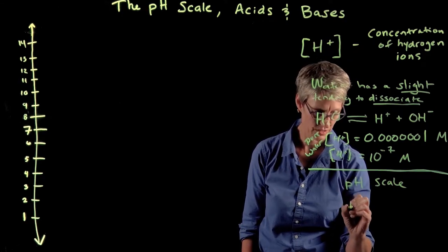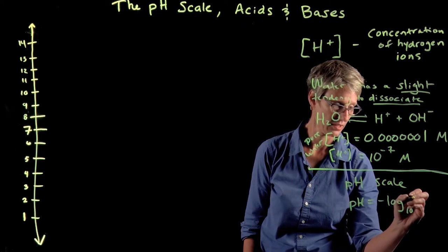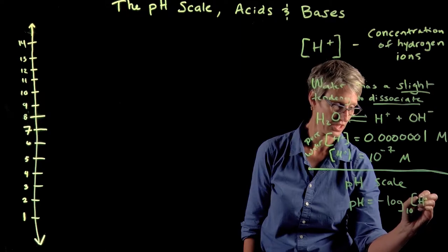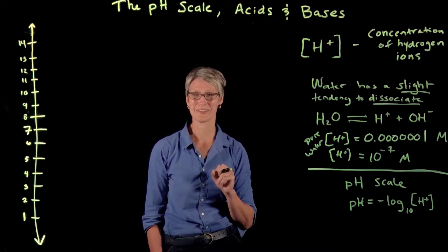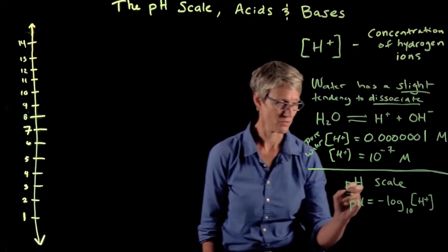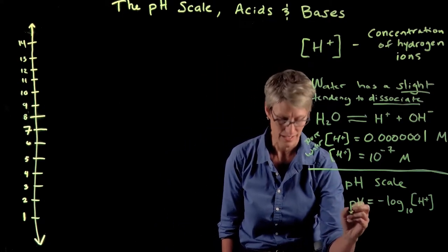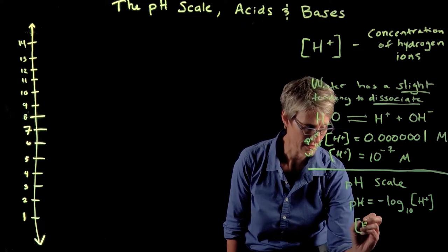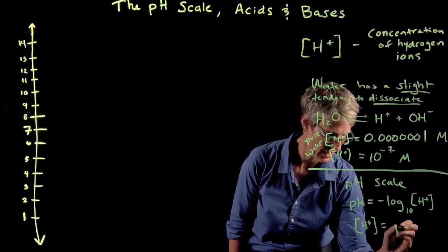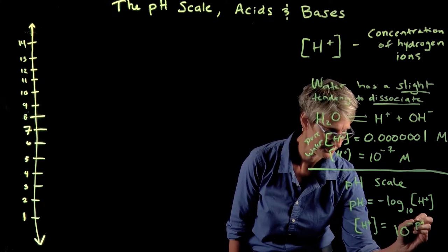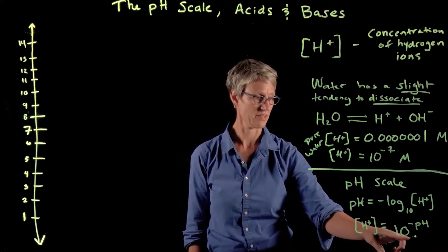pH equals the negative log base 10 of the concentration of hydrogen ions. Remember that the log is the inverse of the exponential function. Another way to write this, and the way that I prefer to think about it, is that [H+] = 10^-pH.